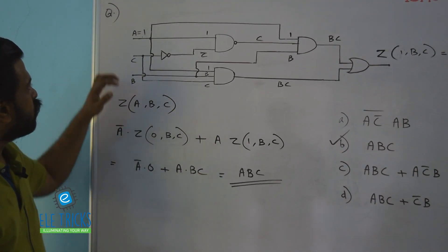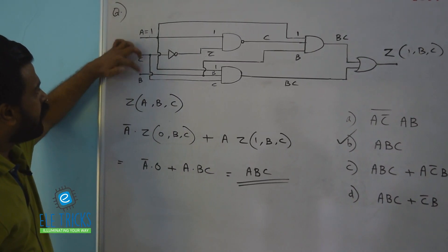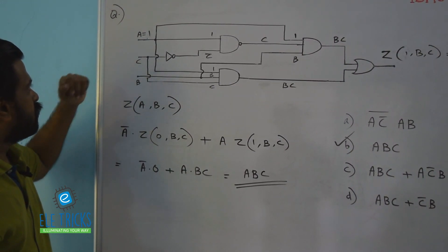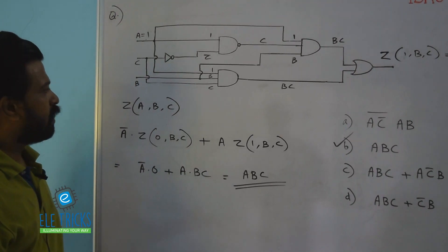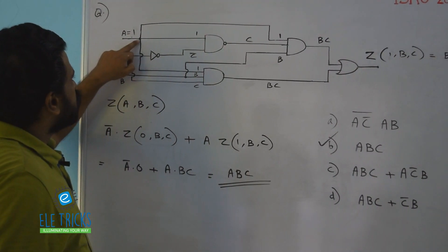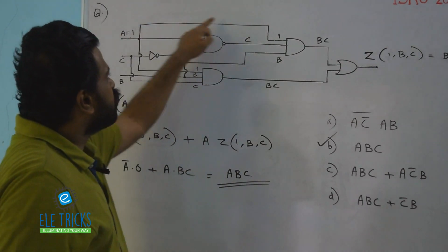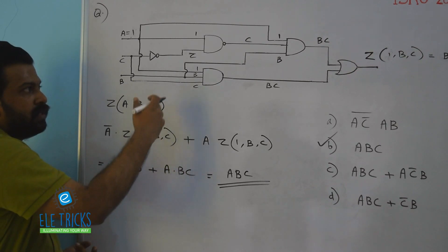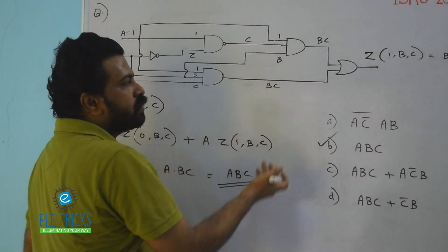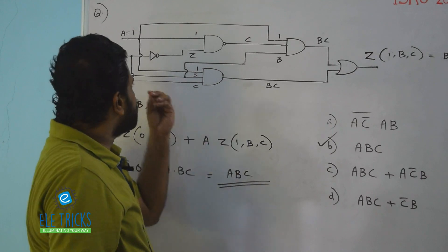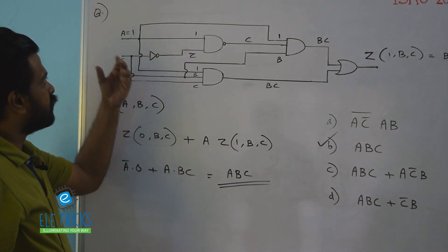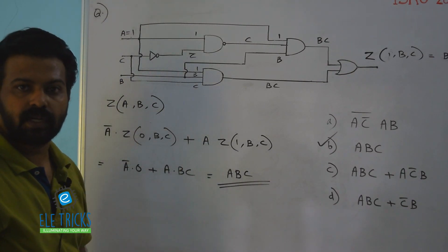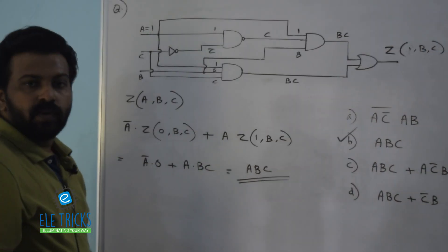One more clarification before stopping: why did I take variable A outside rather than B or C? It doesn't matter which variable you choose, but by intuition, since A is connected to the maximum number of AND gates, there's a higher chance that many outputs go to zero in one of the calculations, reducing the number of steps significantly. Spending a little time selecting the right input variable helps a lot. Thank you.